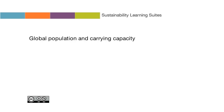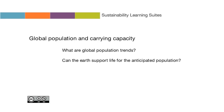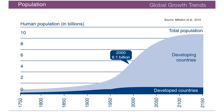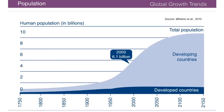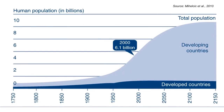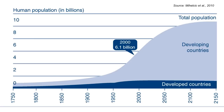In this video on global population and carrying capacity, we'll take a look at global population trends and ask: can the earth support life for the anticipated population, and what are the assumptions within these estimates? This picture gives a snapshot of how the global population has been changing throughout recent history and how it is predicted to change in coming years. Note that the graph is a model based on mathematical population trends and assumptions that these will continue.